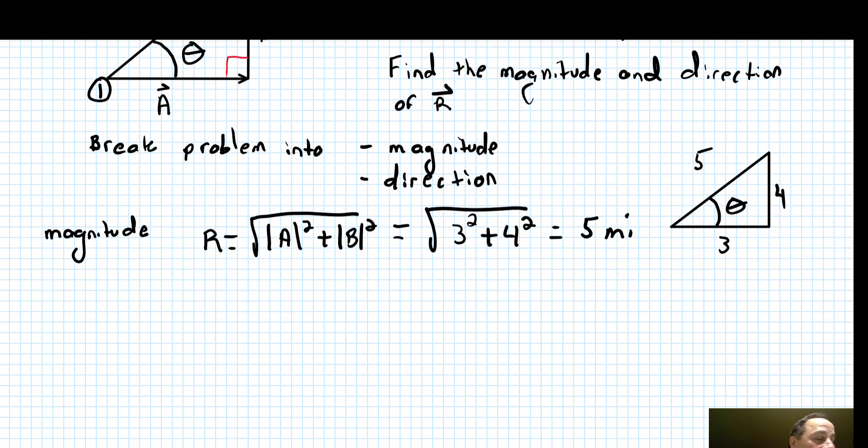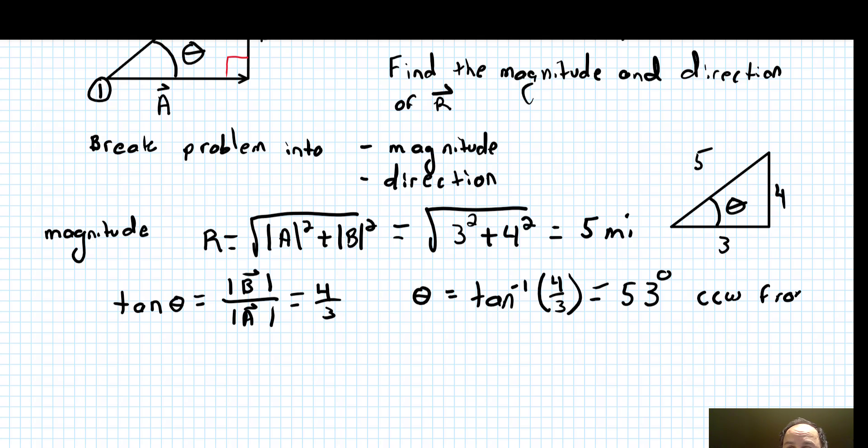We can use our basic trig. The tangent is opposite over adjacent. So tangent of theta equals the magnitude of b over the magnitude of a, which equals 4 over 3. When we work that out, we get the inverse tangent of 4 thirds, and we get an angle of 53 degrees. Remember, this is measured counterclockwise from the x-axis.